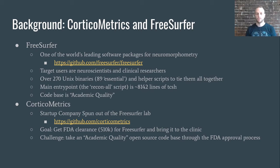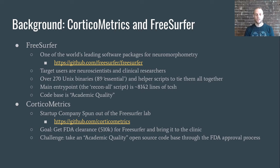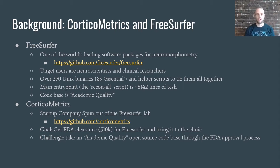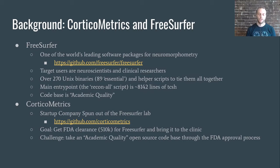This is currently academic software. Its target users are academics, neuroscientists, neuroanatomists, or clinical researchers. It consists of over 270 Unix binaries — about 90 of those are considered essential — and a bunch of helper scripts to tie them all together. The main entry point to the software is what's known as the ReconAll script, and that's about 8,000 lines of T-shell. The entire code base can be considered academic quality.